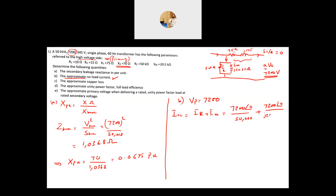The magnetization branch has values on the order of 0.5 times 10 to the power 3. The no-load current is approximately 0.38 amperes at an angle of minus 67.69 degrees. This is a very small current compared to the full load current.